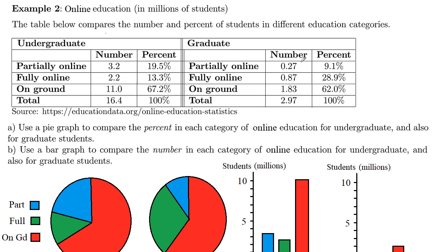For graduate students, the respective numbers were 0.27 million, 0.87 million, and 1.83 million for a total of 2.97 million. Partially online was 9%, fully online approximately 29%, and on-ground 62% for a total of 100%. First, they want us to use a pie graph to compare the percent in each category of online education for undergraduate and then also for graduate.